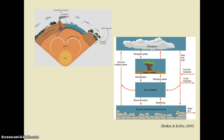Unlike energy, nutrients are constantly recycled from one form to another and pass through multiple trophic levels to decomposers to abiotic forms and back to living organisms again. Nutrients move between organic and inorganic parts of the ecosystem in biogeochemical cycles.